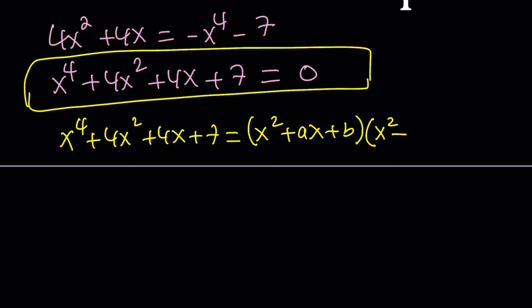The other factor is going to be x squared minus ax. The idea here is to get rid of x cubed — x cubed is formed by the product of an x squared and an x term, so if ax and negative ax are opposite signs, we'll accomplish what we need. And then plus — instead of writing a c and coming up with an extra equation, we can call that 7 over b. This way, we're limiting ourselves to two variables.